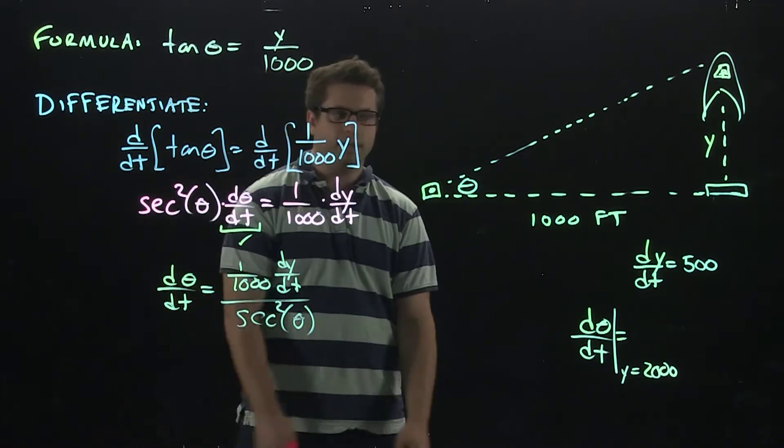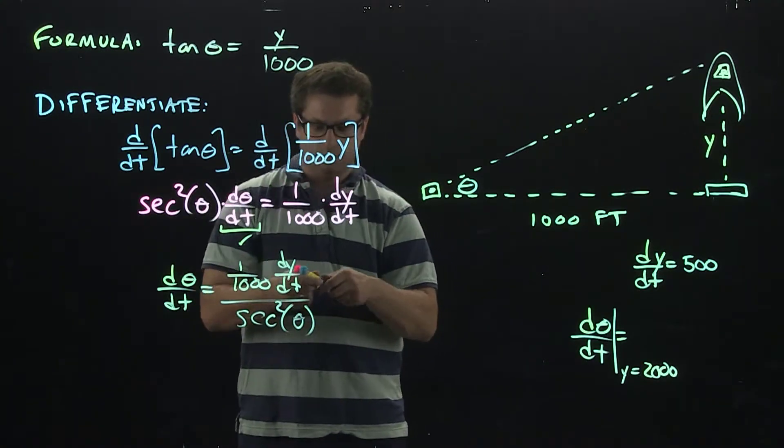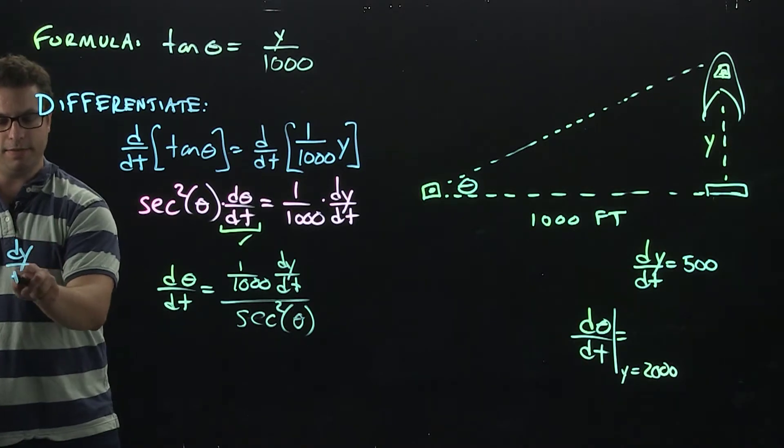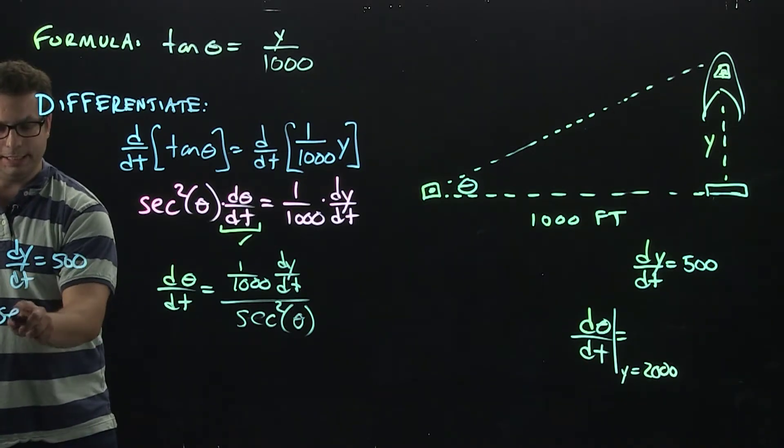Now we just have to plug in the specific information from the word problem. Now we know dy/dt. Let's go over here. We know that dy/dt is 500. We have that. But we don't know what secant theta is.